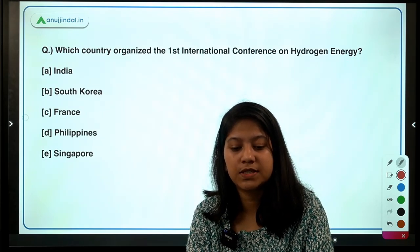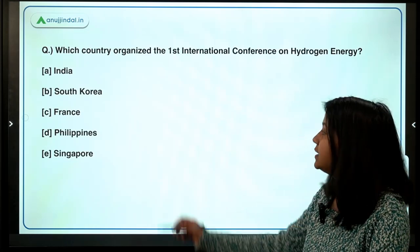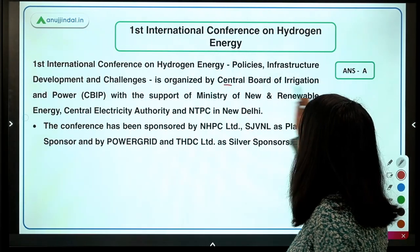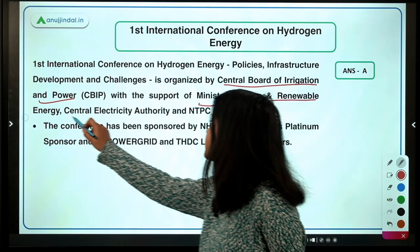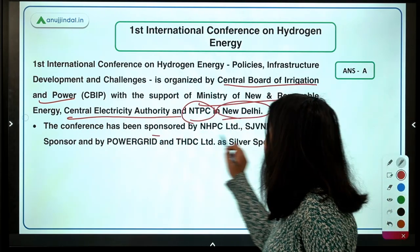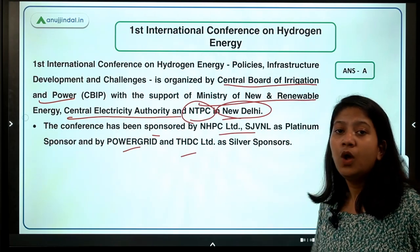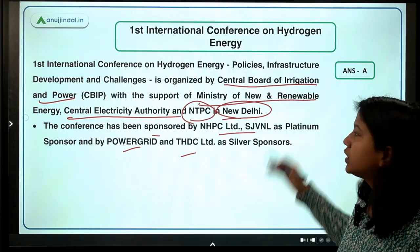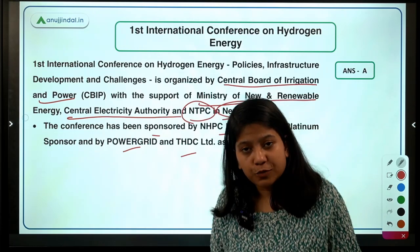Which country organized the first International Conference on Hydrogen Energy? The options are India, South Korea, France, Philippines, and Singapore. The right answer is India. India organized this first International Conference on Hydrogen Energy, organized by the Central Board of Irrigation and Power with the support of the Ministry of New and Renewable Energy, Central Electricity Authority, NTPC, with the venue in New Delhi. Sponsors included NHPC Limited, SJVNL, Power Grid, and THDC.